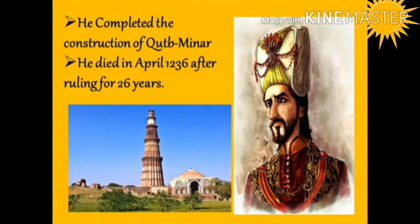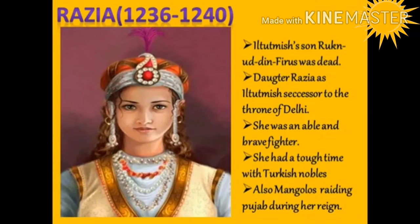Iltutmish completed the construction of the Qutb Minar begun by Qutbuddin Aibak. Iltutmish died in April 1236 after ruling for 26 years. As his son Ruknuddin Firuz proved unworthy, Iltutmish nominated his daughter Razia Sultana as his successor to the throne of Delhi.